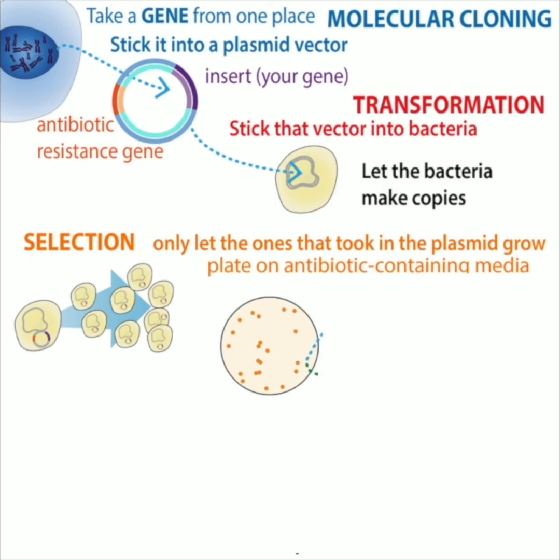If you were, however, to plate those cells on food containing the antibiotic kanamycin, they wouldn't have resistance, and so they would die out. So it's specific resistance to the antibiotic, and this allows you to specifically select for bacteria of your choosing — the ones that have the DNA that you wanted them to have.